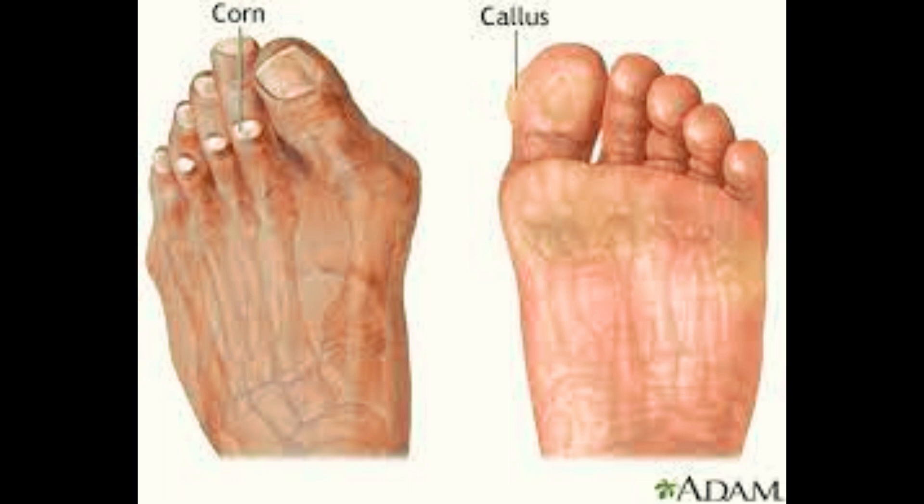Preventing diabetic foot complications involves maintaining good blood sugar control, regularly inspecting the feet for any signs of injury or infection, wearing appropriate footwear, practicing proper foot hygiene, and seeking prompt medical attention for any foot problems. Regular foot exams by a healthcare professional are also crucial to identify and address any issues early on.